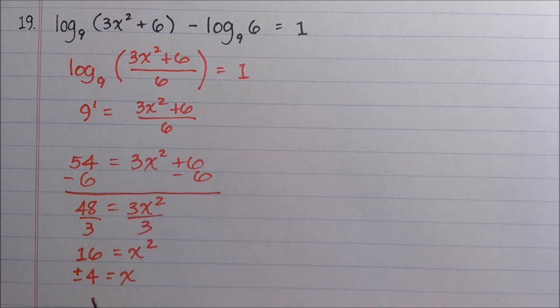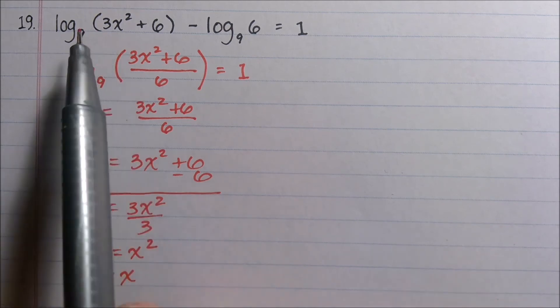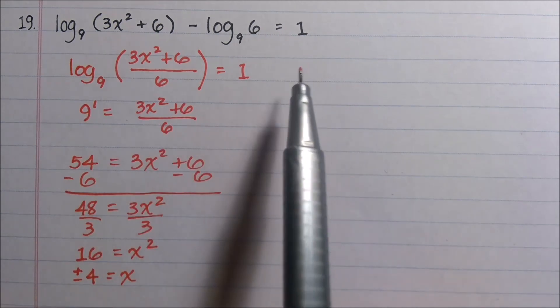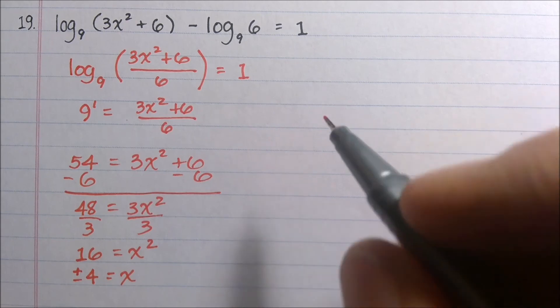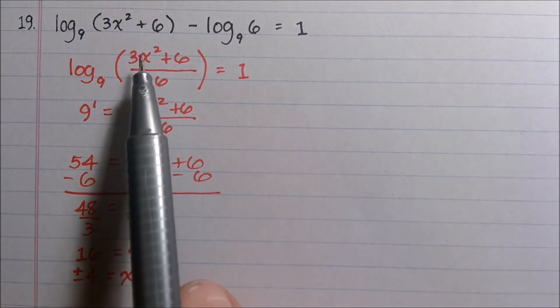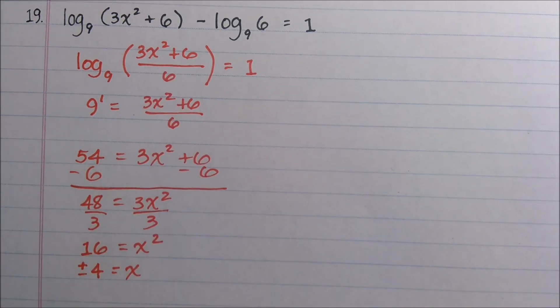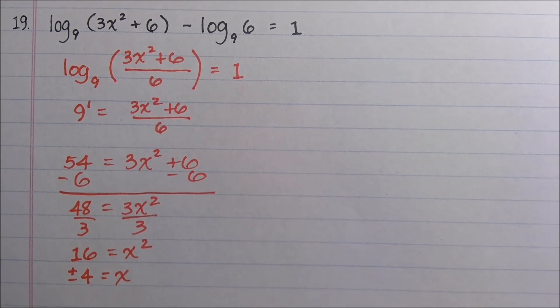The only thing left to do is make sure that when we substitute positive and negative 4 back into the original equation, does it truly give us the answer? So when we check for extraneous solutions, we'll notice that we're going to be squaring x. So positive and negative 4 both work.